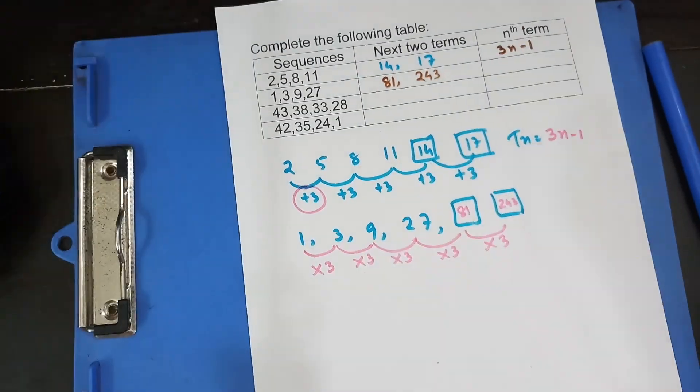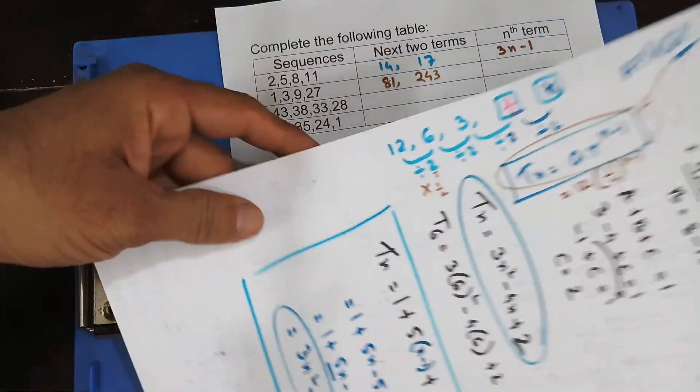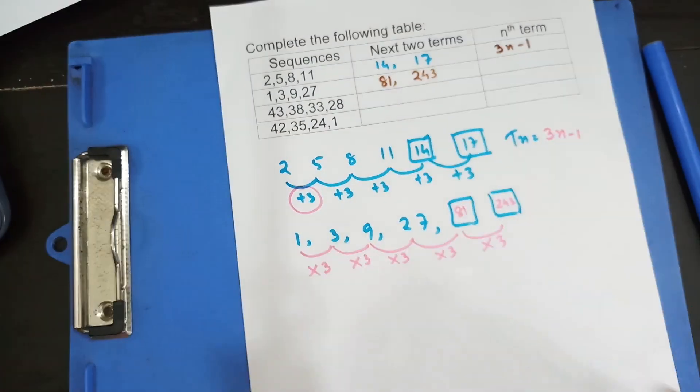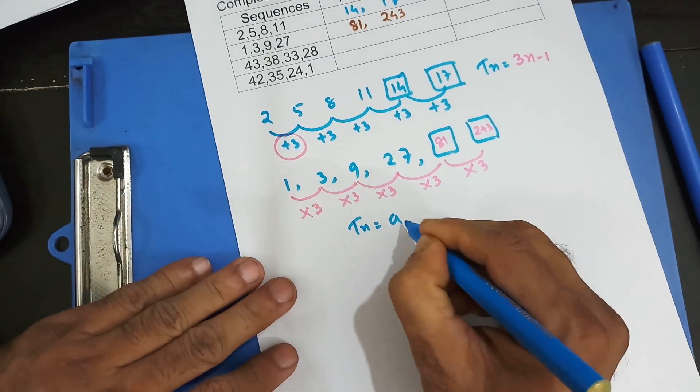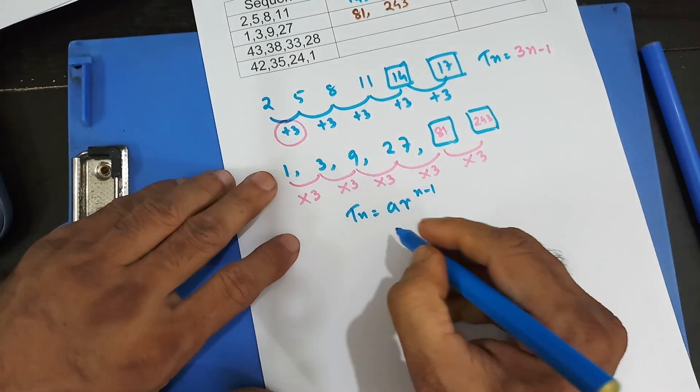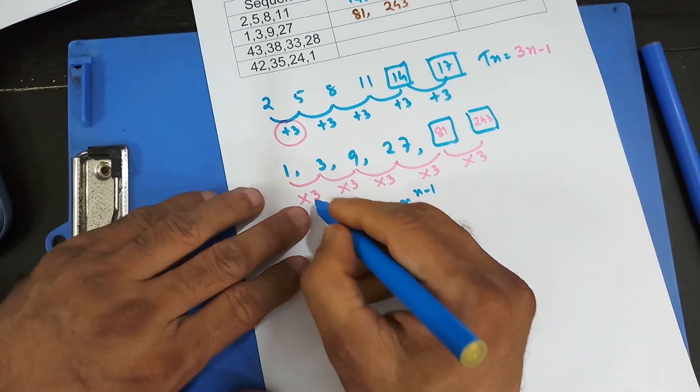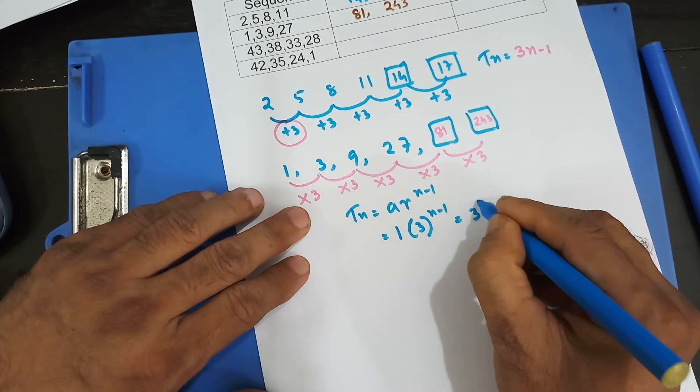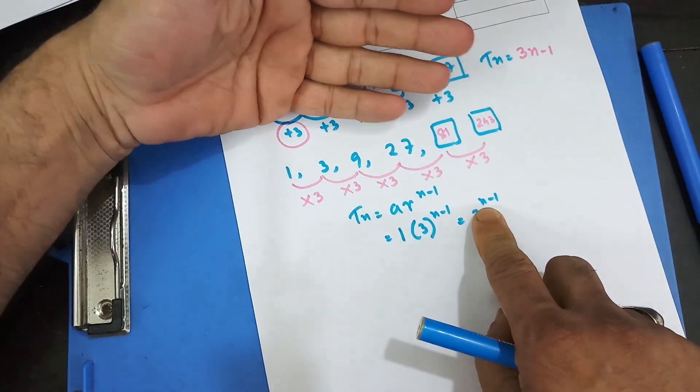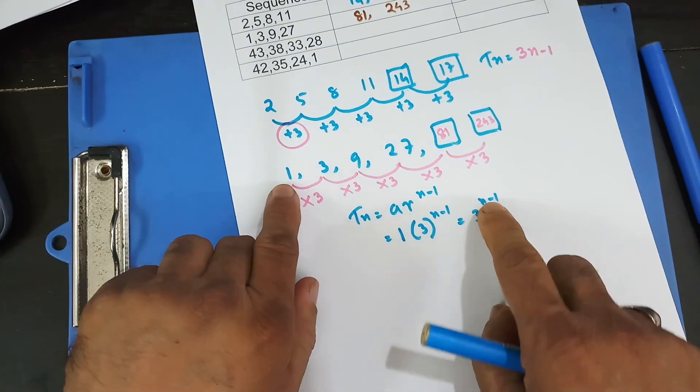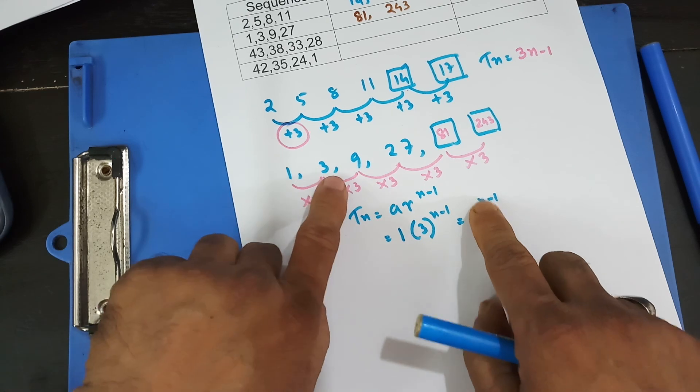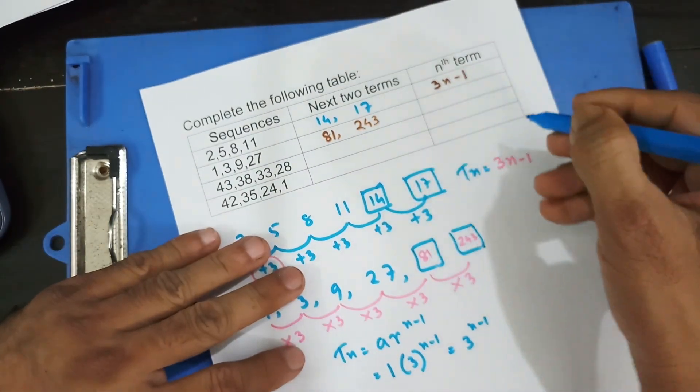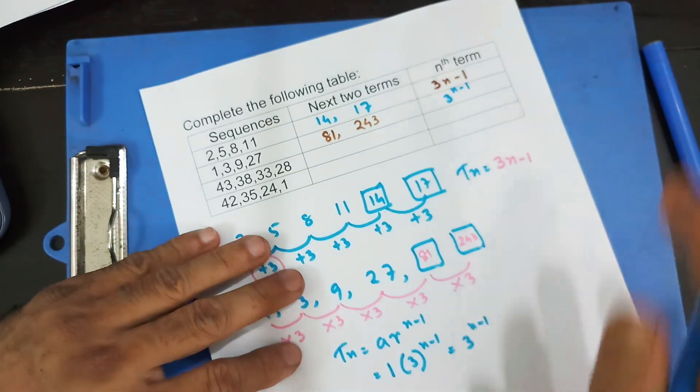What about the nth term? In my last video, sequence 2, I did show you how to find out geometric progression or geometric sequence. The formula was AR to the power n minus 1. So Tn is AR to the power n minus 1. Here A is 1, the first term is 1. R is going to be 3, the common ratio, and n minus 1. Any number multiplied by 1 is the number itself. So it's going to be 3 to the power n minus 1. Let's try that. When n equals 1, 3 to the power 0 equals 1. If n equals 2, 3 to the power 1 is 3. If n equals 3, 3 to the power 2 is 9. So that's the nth term: 3 to the power n minus 1.